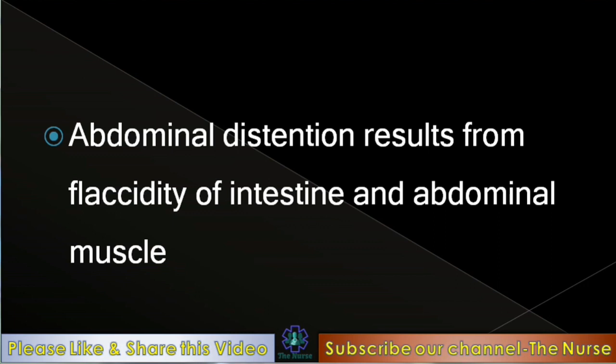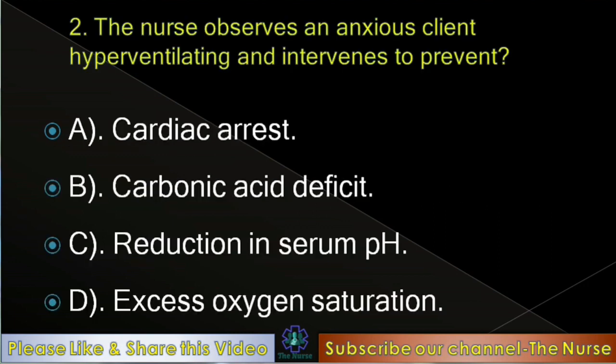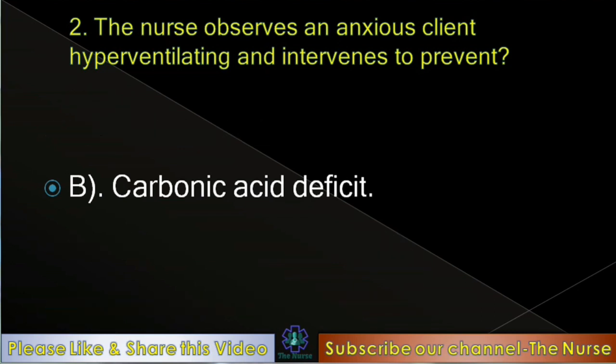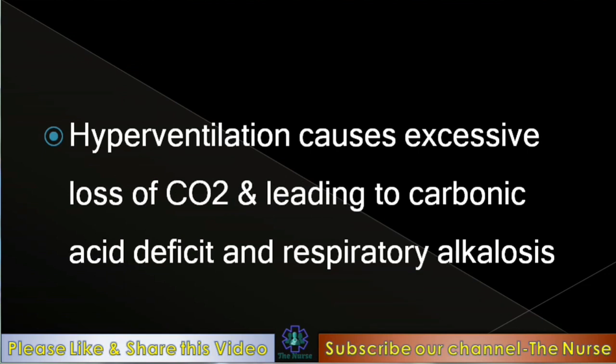Next question: The nurse observes an anxious client hyperventilating and intervenes to prevent — cardiac arrest, carbonic acid deficit, reduction in serum pH, or excess oxygen saturation. Correct answer: Carbonic acid deficit. Hyperventilation causes excessive loss of carbon dioxide, leading to carbonic acid deficit and respiratory alkalosis.